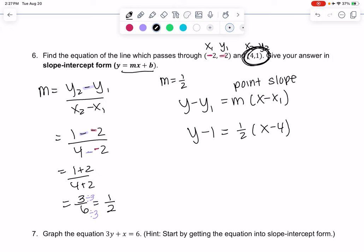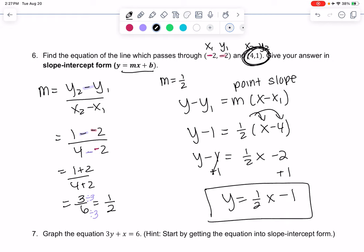We'll just simplify this a bit. So y minus 1 equals 1 half x minus 2. Then we'll move the 1 to the other side, plus 1 plus 1, and we get y equals 1 half x minus 1. Negative 2 plus 1 is minus 1. That is slope intercept form.